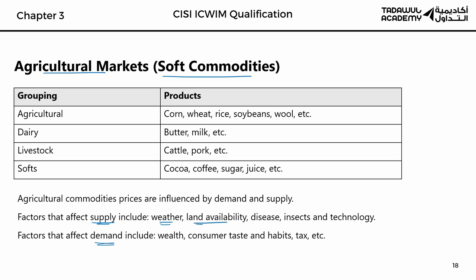Land availability is another factor, especially urban expansion. Watch out for this word. Urban expansion means when cities are growing and growing, villages are getting smaller and smaller. Villages are where farming happens, so because cities are growing, farming is decreasing. Diseases and insects also affect supply. Plants get sick and insects damage them. If a harvest is attacked by insects or disease, there will be no harvest that year, meaning supply will go down.